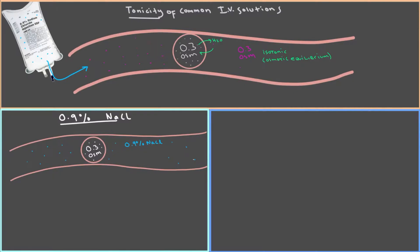One important thing though about this 0.9% sodium chloride solution, which will be key to understanding how it works, is that this solution, 0.9% NaCl, has an osmolarity of pretty much exactly 0.3, which is exactly the osmolarity of a normal cell.